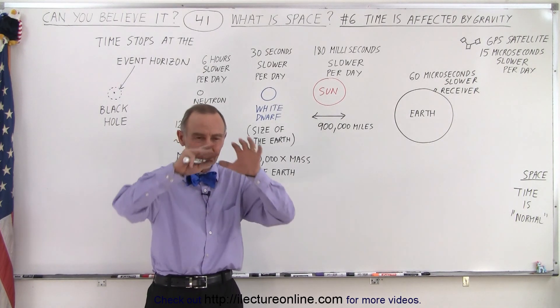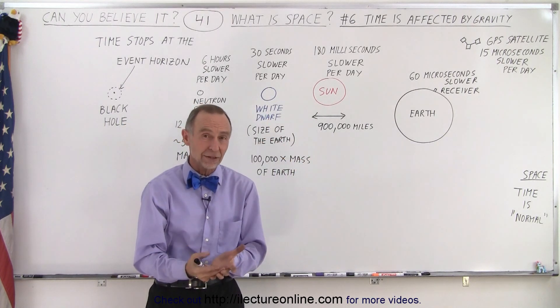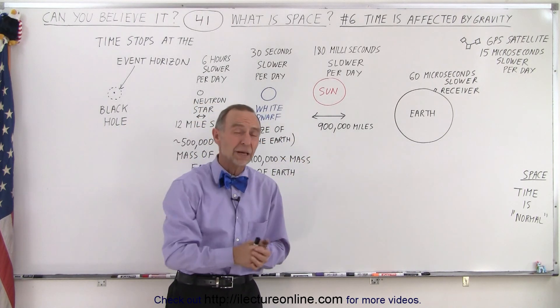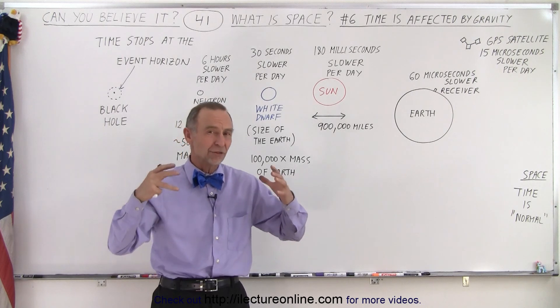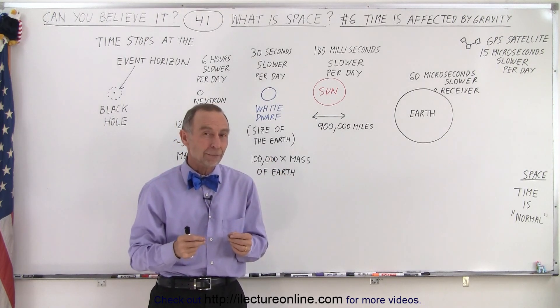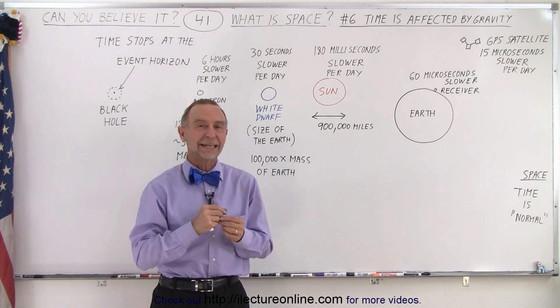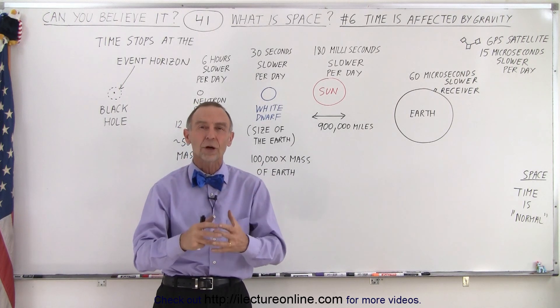When you place a mass in space, it does something to space around it. It causes light to bend in space or change direction in space. It causes what appears to be the force of gravity. But even more perplexing, it causes time to run slower.